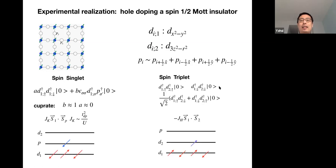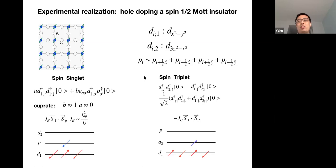Alternatively, if the d2 orbital has smaller energy than the oxygen orbital, the dopant hole enters d2. Since d2 is another d-orbital on the same square lattice site, there is no hopping between d1 and d2—they are orthogonal—but there is a large Hund's coupling between them. As a result, d1 and d2 form a spin-triplet doublon. In this talk I assume SU(2) spin rotation symmetry, so spin singlet and spin triplet cannot mix. This gives two different scenarios for doping a spin-one-half Mott insulator: the conventional case (spin-singlet doublon, studied for decades) and this unconventional case—the spin-triplet t-J model—which has not been explored so far.